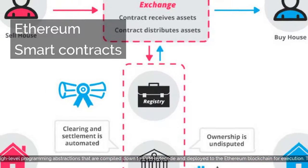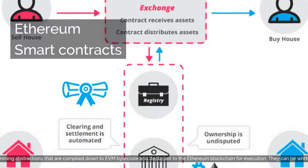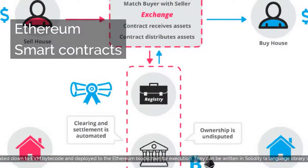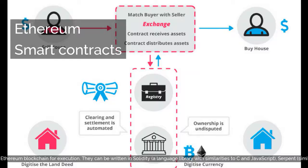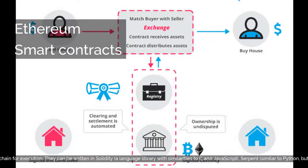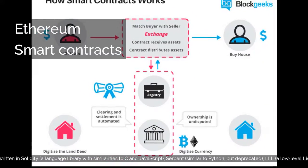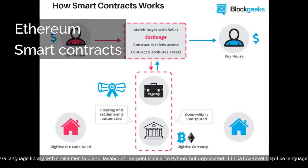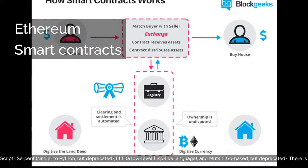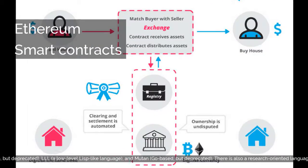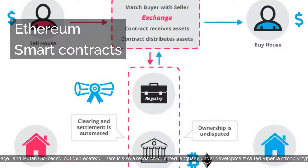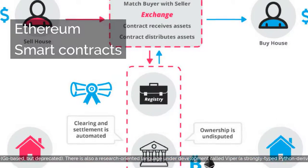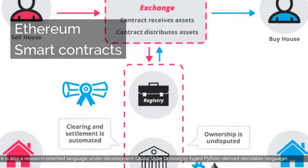Smart Contracts can be written in Solidity, a language library with similarities to C and JavaScript; Serpent, similar to Python, but deprecated; LLL, a low-level Lisp-like language; and Mutan, Go-based, but deprecated. There is also a research-oriented language under development called Viper, a strongly typed Python-derived decidable language.